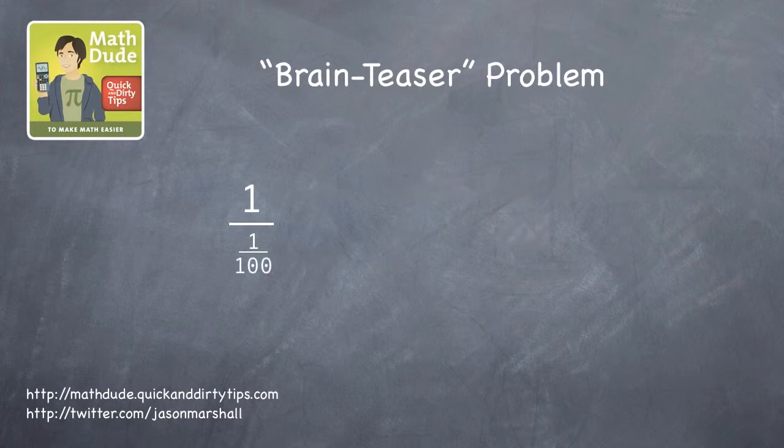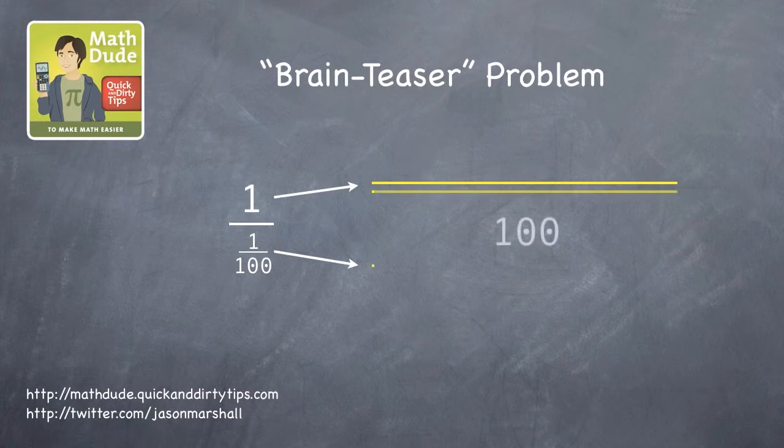Let's keep going. 1 one hundredth in the denominator. Now we're talking about a tiny number on the bottom. How many of those tiny numbers does it take to make 1? It's 100.